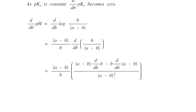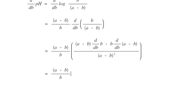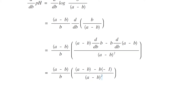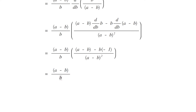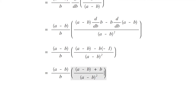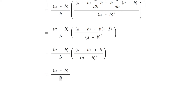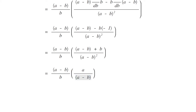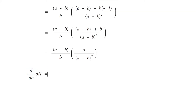Taking the derivative of the bracket terms using the quotient rule: (a minus b) times d/db(b) minus b times d/db(a minus b), all divided by (a minus b) squared. This becomes (a minus b) divided by b, multiplied by [(a minus b) minus b(minus 1)] divided by (a minus b) squared. Simplifying, b cancels and we get d(pH)/db equals a divided by b(a minus b). This is equation number three.